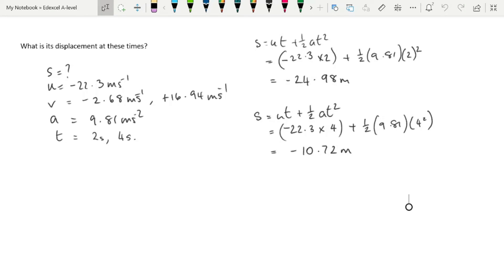When we look at these numbers, they might not mean very much at first. But let's think about it. At 2 seconds, it has a displacement from the hand of minus 24.98 meters.